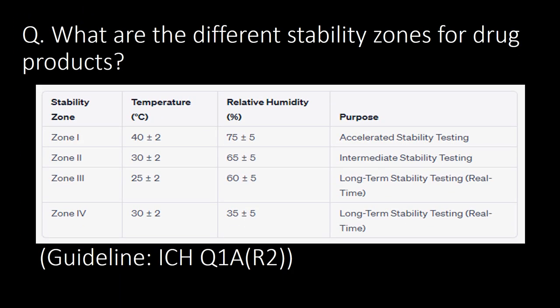Next question: what are the different stability zones for drug products? You can refer to the table below for different stability zones and their temperature and relative humidity requirements as per guideline ICH Q1A R2. Zone 1 is for accelerated stability testing, Zone 2 is for intermediate stability testing, and Zones 3 and 4 are for long-term stability testing, i.e., real-time data.